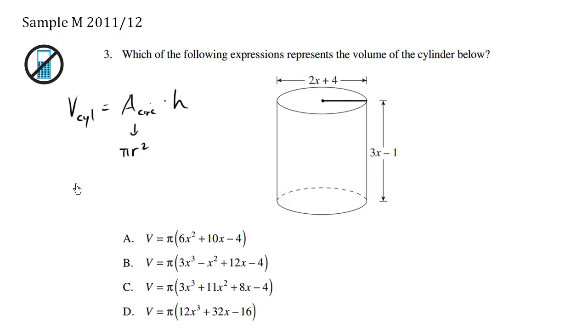So essentially, the volume of the cylinder equals πr² where our r value is half of 2x + 4, so it's going to be x + 2, times the h. The h value is given as 3x - 1.